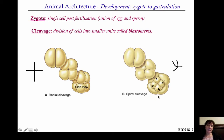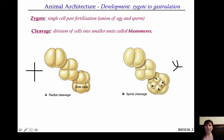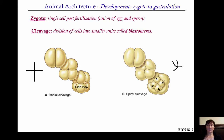What's really key is what you're seeing here in the eight-cell stage. At that point, the four cells on top are sort of off-center from the ones on the bottom. So instead of being directly one on top of the other, these cells are sitting on top of the intersection between the two at the bottom. There are consequences to having radial cleavage versus spiral cleavage, and I'll show you that in just a moment.